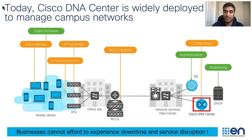Today, Cisco DNA Center manages your campus network infrastructure, which comprises of both wired and wireless devices like switches, routers, wireless LAN controllers and access points, and of course, the end clients. If there is a service outage or performance degradation on the network, the cost of downtime can be very high for businesses. Cisco DNA Center helps you move fast to proactively identify and fix the root cause of the problem.